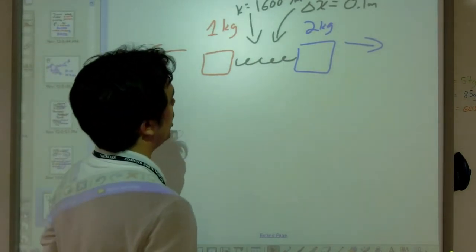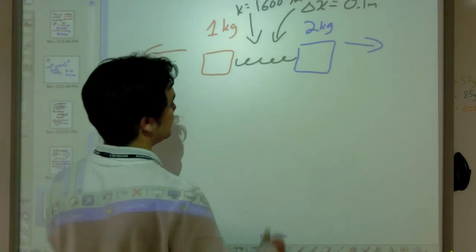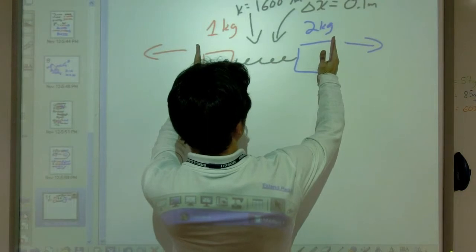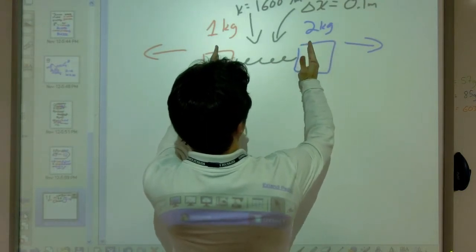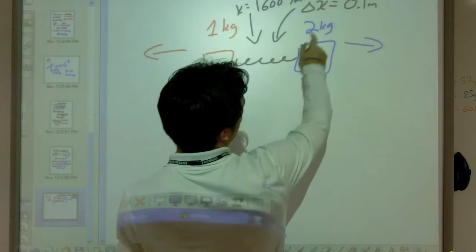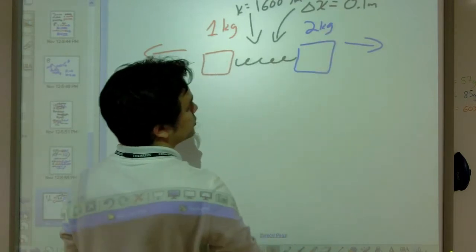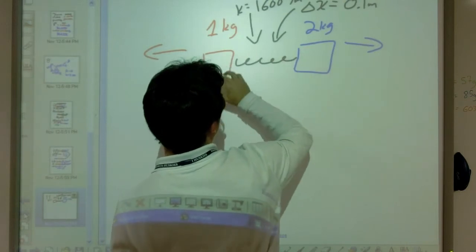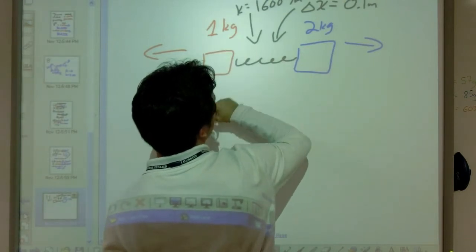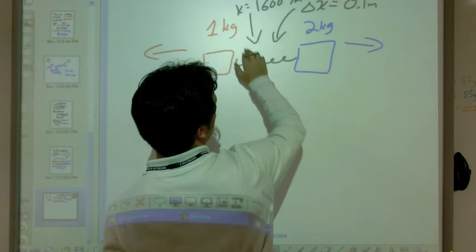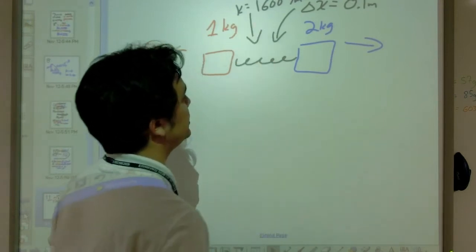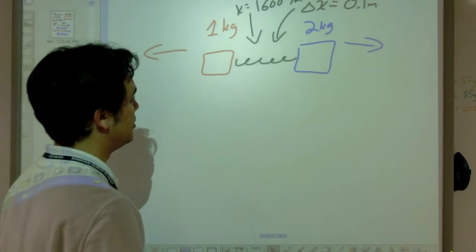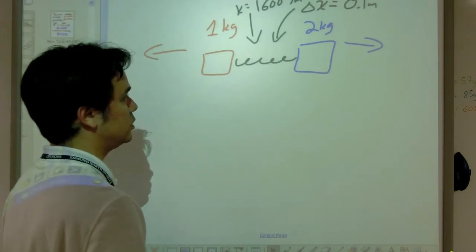What I have here are two little boxes and what I've done is I've put a spring in between them, not connected to them, but just squished between them. And I've actually put the blocks where they are squishing that spring by 10 centimeters, also known as 0.1 meters. The blue block is 2 kilograms and the red block is 1 kilogram. The stiffness of the spring, our spring constant, is 1600 newtons per meter.